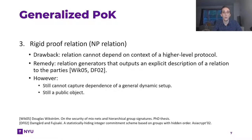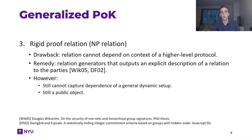Third, the standard proof of knowledge notion considers the proof relation to be static and fixed. So for a proof of knowledge protocol, you first assume the relation is fixed and then design a specific protocol for it. It has been observed very early on — for instance by Wickstrom and also Damgard et al. — that in many cases this is too limiting. They put forward the notion of relation generators, essentially an algorithm that first generates the relation and then outputs an explicit description of it to all parties. So a given protocol does not just have to work for one specific relation, but for some probabilistic relation generation mechanism.